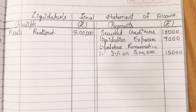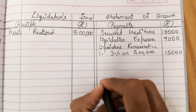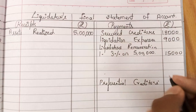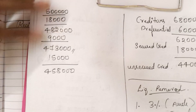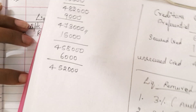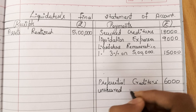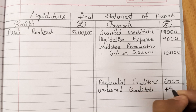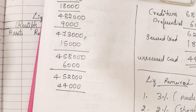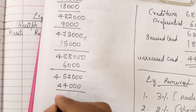There are no debentures. So we go straight to preferential creditors. Preferential creditors are rupees 6,000. So from 4,58,000 we pay 6,000, and the balance will be 4,52,000. Next we have to pay the unsecured creditors of rupees 44,000. So 4,52,000 minus 44,000 equals 4,08,000.